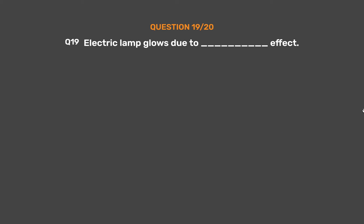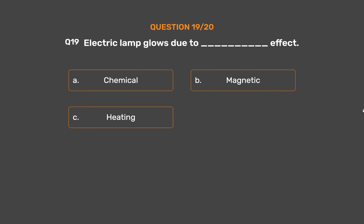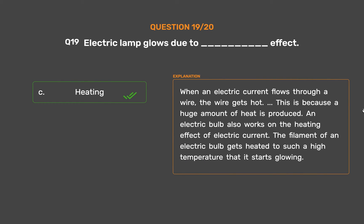Question No. 19: Electric lamp glows due to underscore effect. Option A: Chemical. Option B: Magnetic. Option C: Heating. Option D: None of these. The correct answer is Option C: Heating. When electric current flows through a wire, the wire gets hot because a huge amount of heat is produced. An electric bulb's filament gets heated to such a high temperature that it starts glowing.